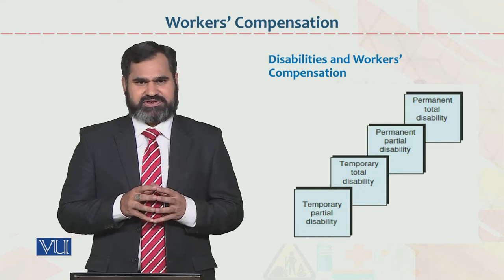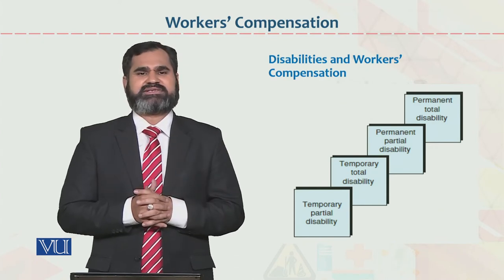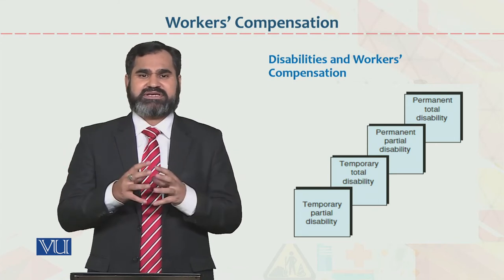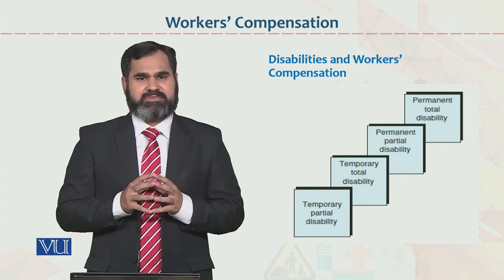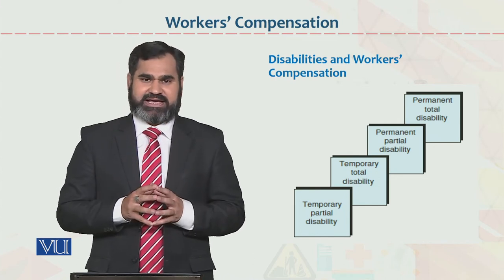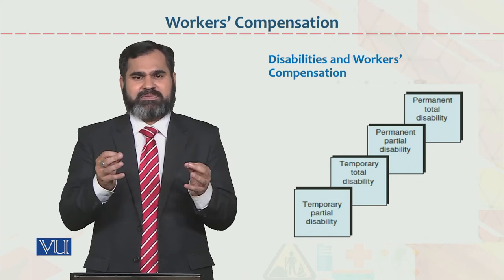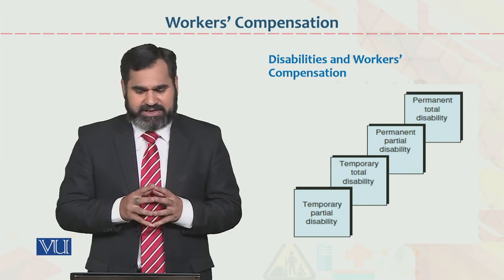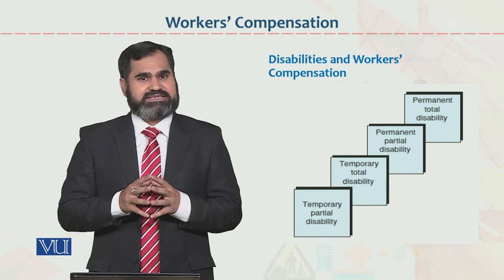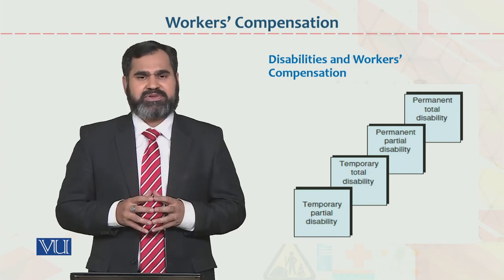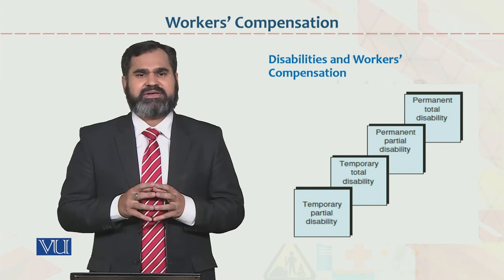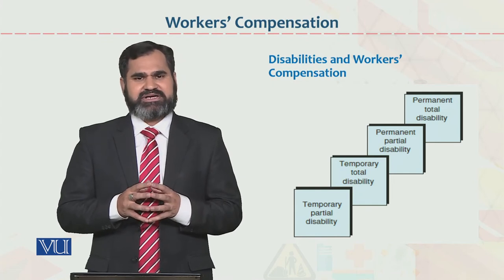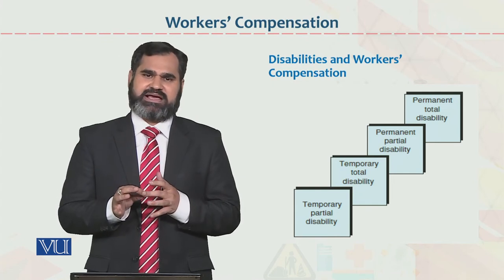Disabilities and Workers' Compensation - dear students, یہاں چار types ہیں۔ پہلے case میں permanent total disability ہو سکتی ہے - اس case میں compensation سب سے زیادہ ہوگی۔ دوسرے case میں permanent partial disability - جسم کا کوئی organ injury کی وجہ سے ضائع ہو جائے۔ تیسرا temporary total disability۔ اور last ہے temporary partial disability - اس case میں سب سے کم compensation ملتی ہے کیونکہ یہ partial اور temporary ہے۔